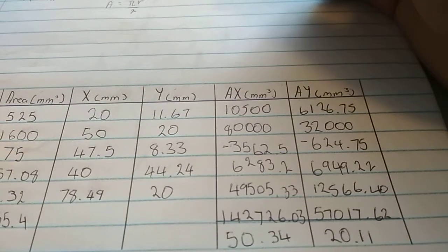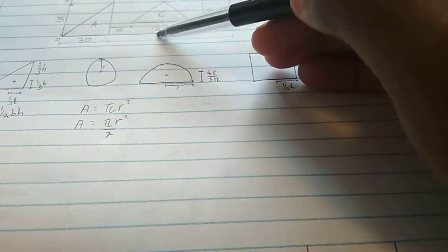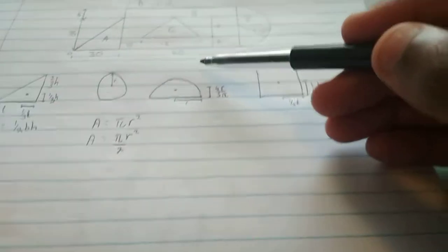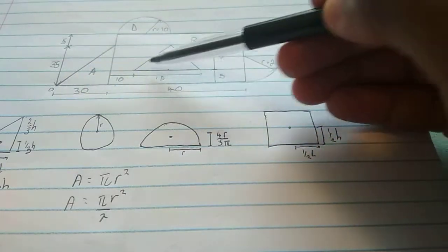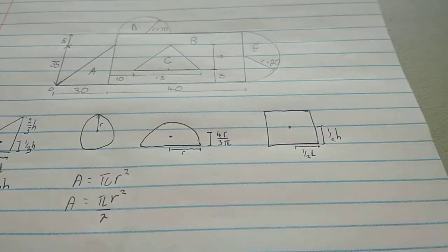It's located at 50.3, so it's somewhere there. 20 there, 30 there, it's somewhere there. And then, on the Y from here, it's 20.1, so it's somewhere there. So, the centroid, final centroid is somewhere in there.